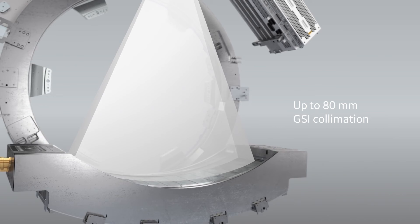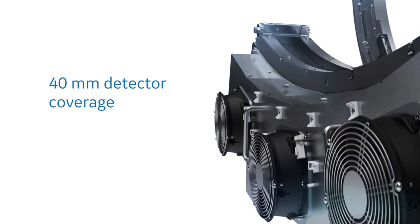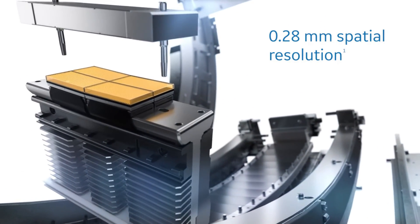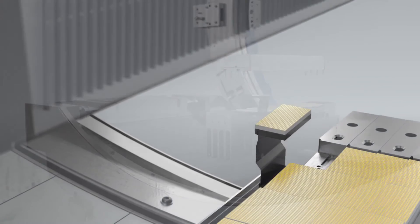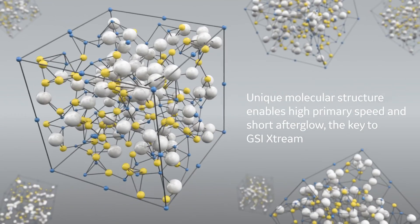The last component is the detectors. Detectors collect information regarding the degree to which each anatomic structure attenuated the beam. In conventional radiography, a film-screen system records attenuated information, whereas in CT, detectors are used. The detector array describes the entire collection of detectors in the system, comprising detector elements situated in an arc or ring, each measuring the intensity of transmitted X-ray radiation along a beam projected from the X-ray source to that particular element. Also included are reference detectors that help calibrate data and reduce artifacts. Detectors can be made from different substances, each with their own advantages and disadvantages.